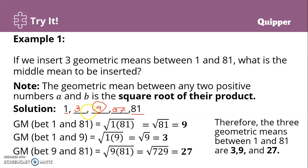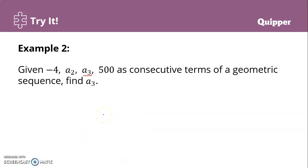The previous method works for one, three, five, or other odd numbers of geometric means. However, in this problem we are looking for two geometric means — an even number — so we cannot use that process. Instead, we are going to use another method.